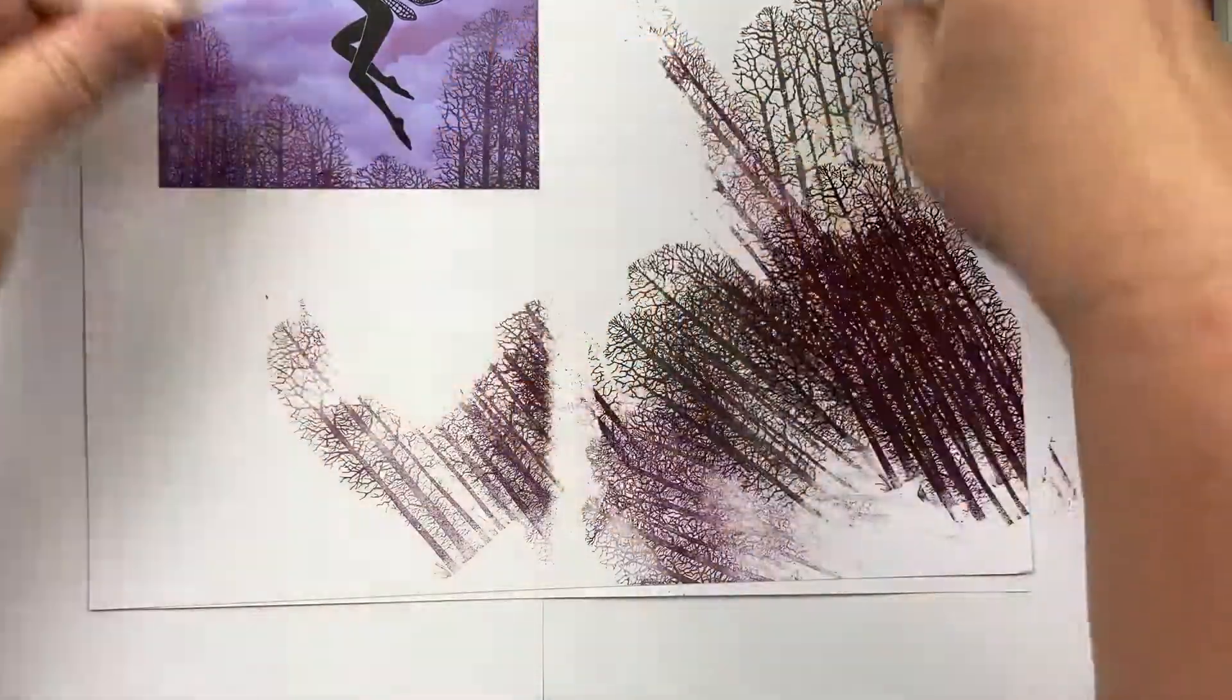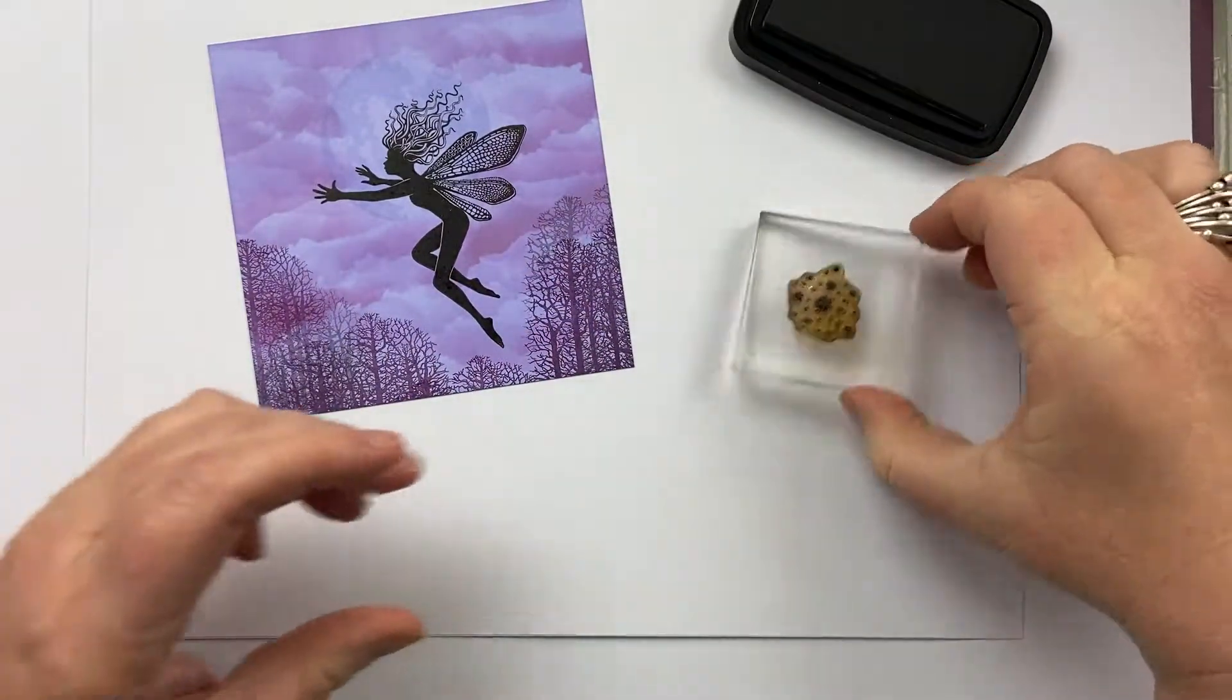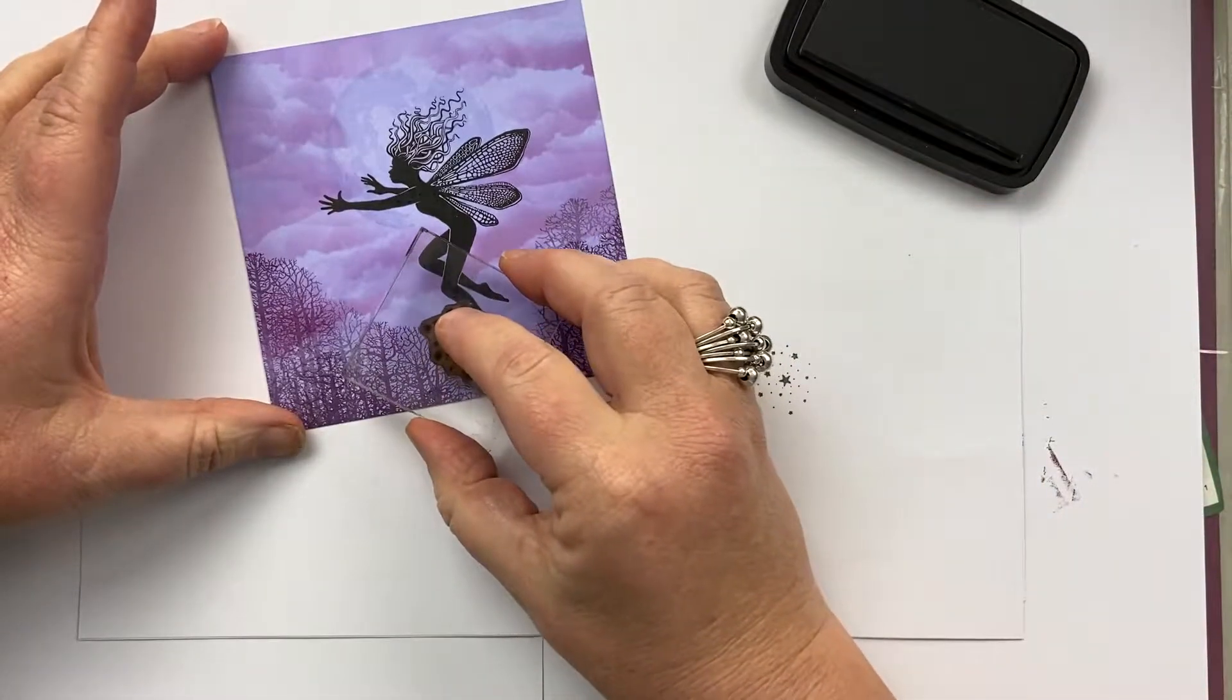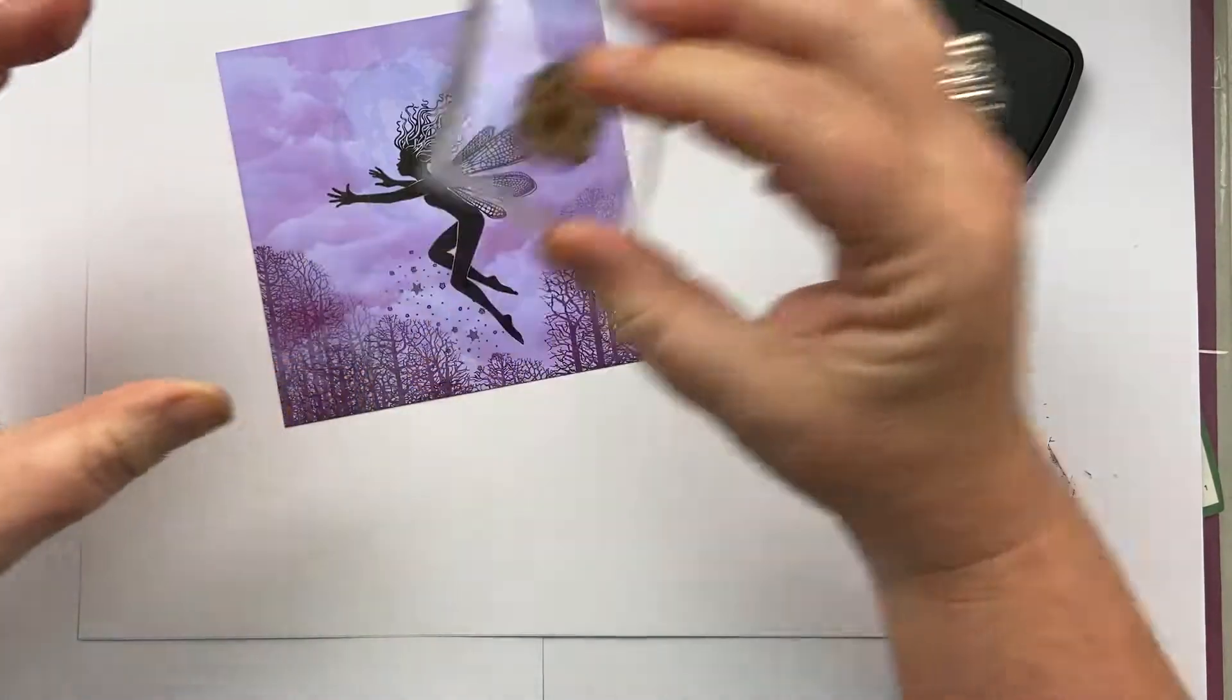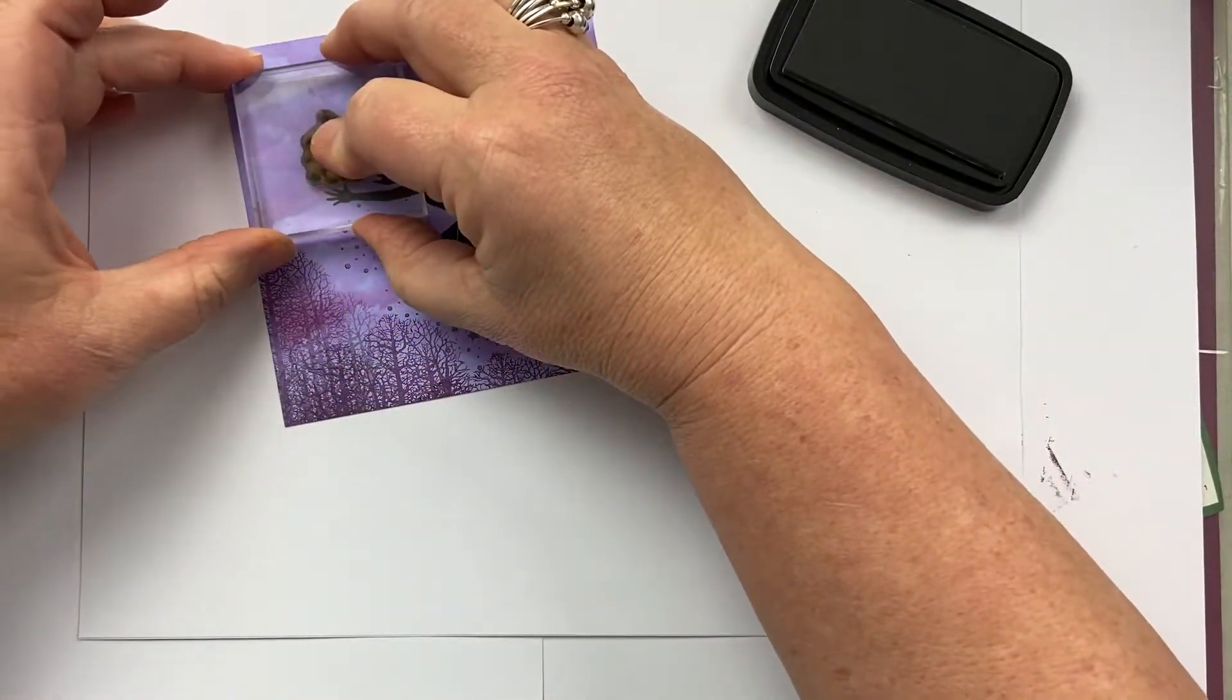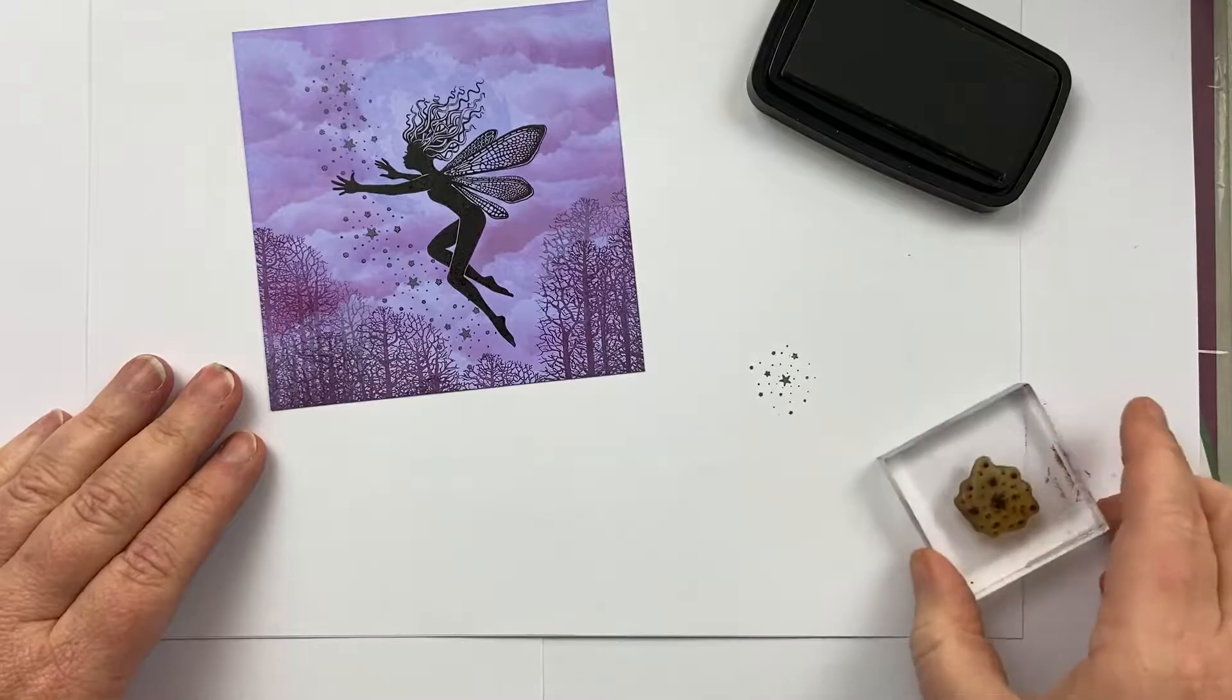Then I'm going to take my Miniature Stars stamp and again I'm going to use Morning Mist, just this lovely greyish colour, and I'm just going to pop a few of these stars in and around her. As I say, she's welcoming the magic, sprinkling the magic wherever she's going.